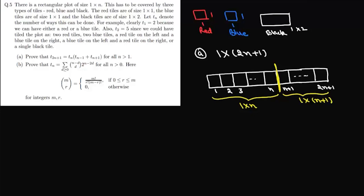We need to find the total number of ways to arrange the tiles, that is t(2n+1). One way is to arrange tiles in the 1×n plot in t(n) ways and the remaining 1×(n+1) portion in t(n+1) ways. This gives the first case of tiling this plot.